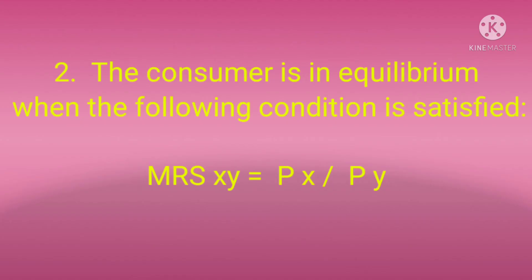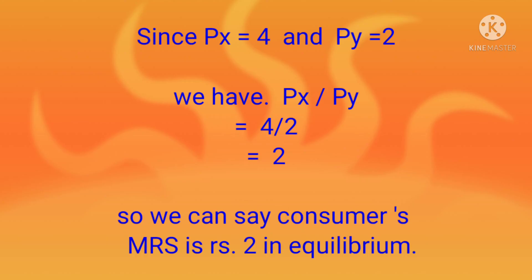Part B: The consumer is in equilibrium when the following condition is satisfied: the marginal rate of substitution (MRS) for products X and Y is equal to the price of product X divided by the price of product Y. Since price of X is 4 and price of Y is 2, we have Px/Py = 4/2 = 2. Therefore, the MRS for product X and Y is equal to 2 at the consumer's equilibrium position.